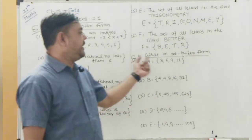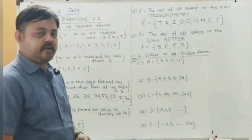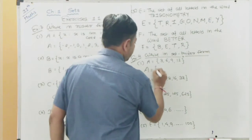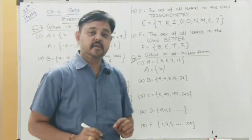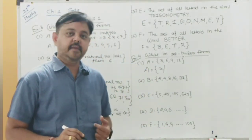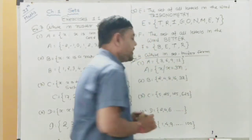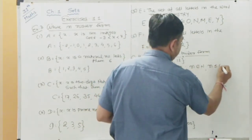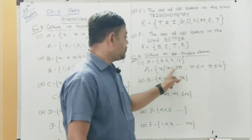Example number 4: write in set builder form. The question is in roster form — convert to set builder form. Set A = {3, 6, 9, 12}. The property is multiples of 3. But writing only 'multiple of 3' would be wrong because 15, 30 are also multiples of 3. So: A = {x : x = 3n, n ∈ N and n ≤ 4}, giving us 3, 6, 9, 12.